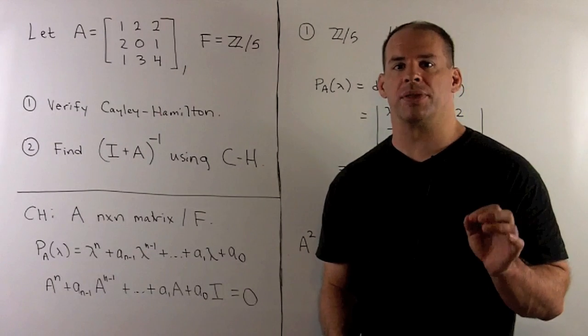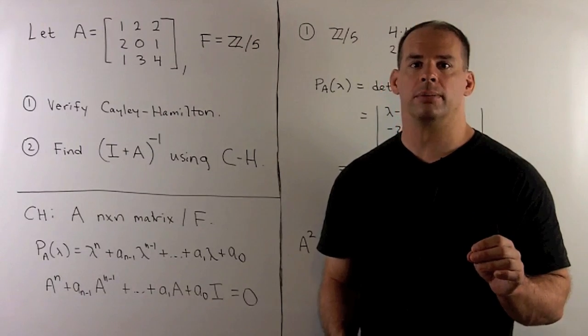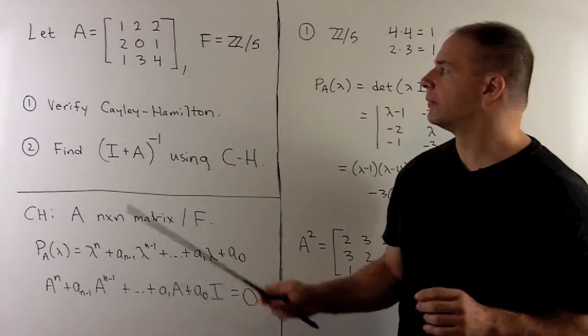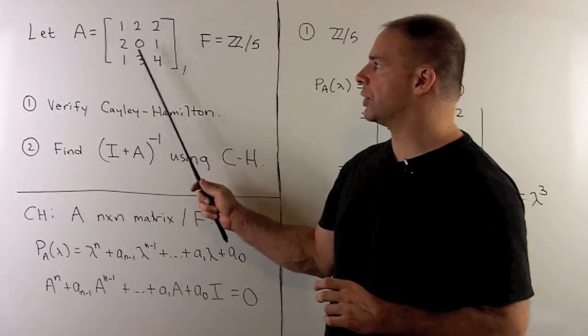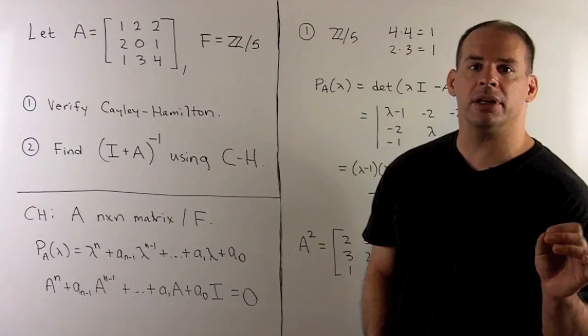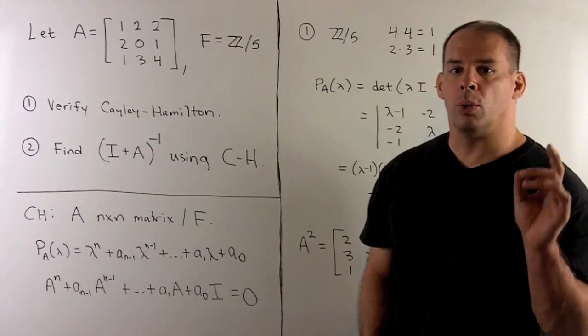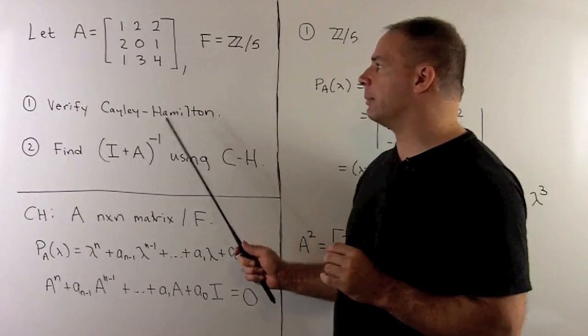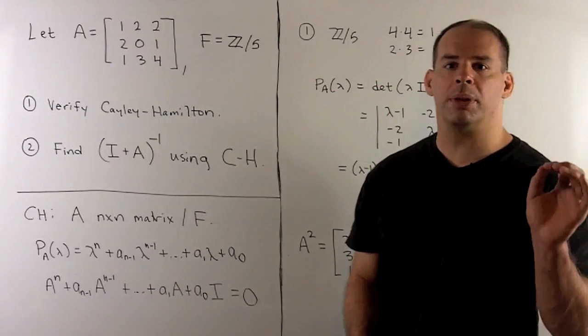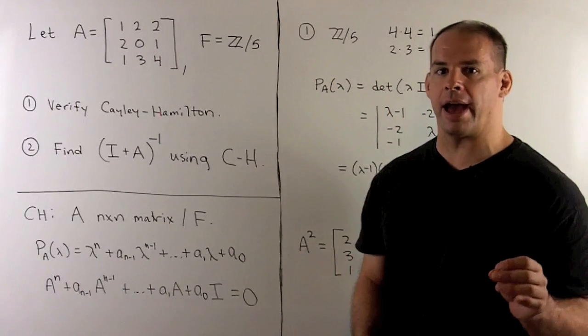Here's an example of the Cayley-Hamilton theorem over a finite field. Let A be equal to the 3 by 3 matrix [1 2 2; 2 0 1; 1 3 4] with entries in the finite field Z mod 5. We want to verify the Cayley-Hamilton theorem for this matrix and find (I + A)^(-1) using the Cayley-Hamilton theorem.